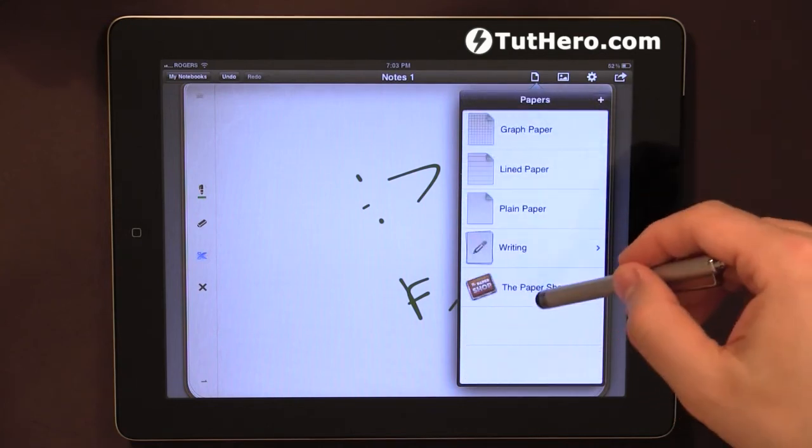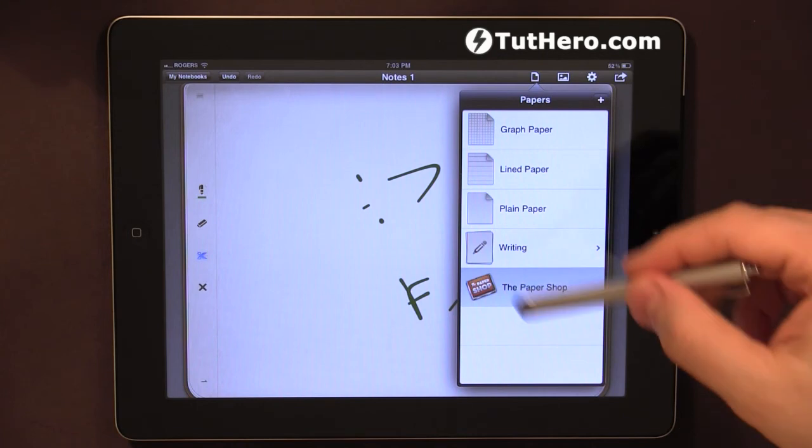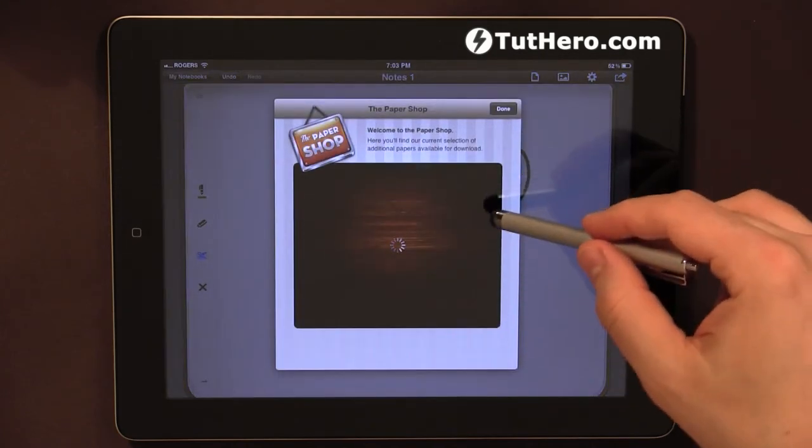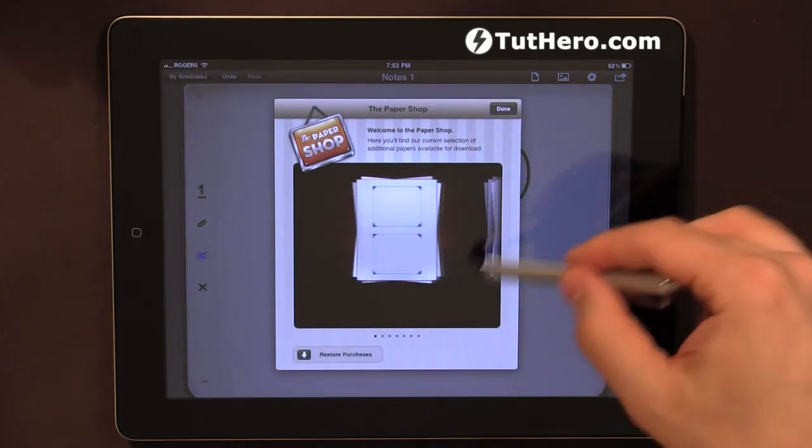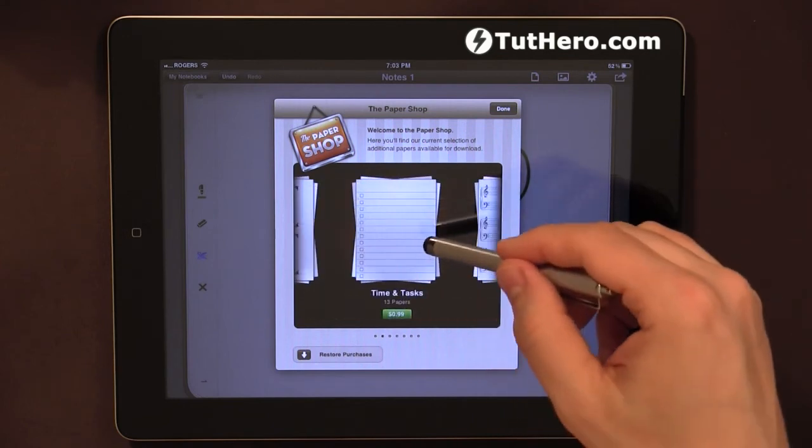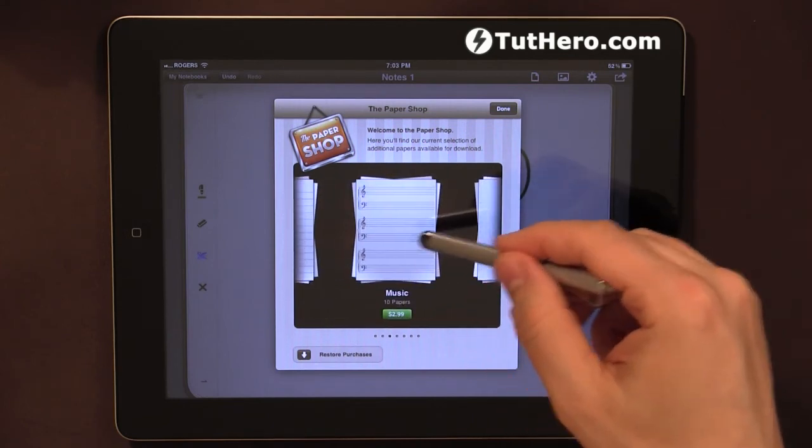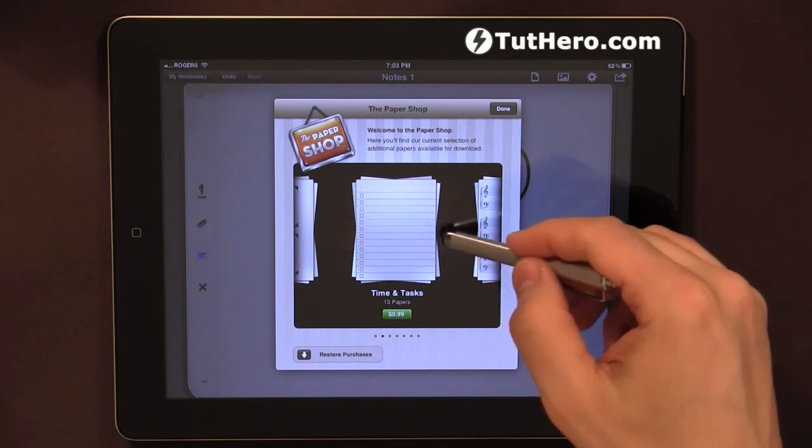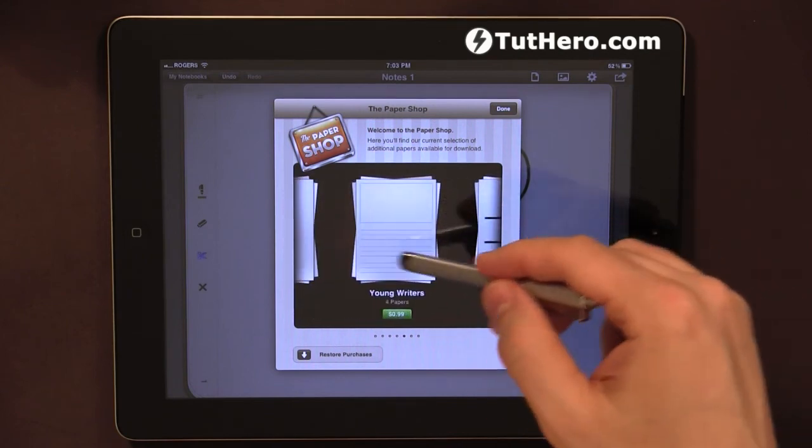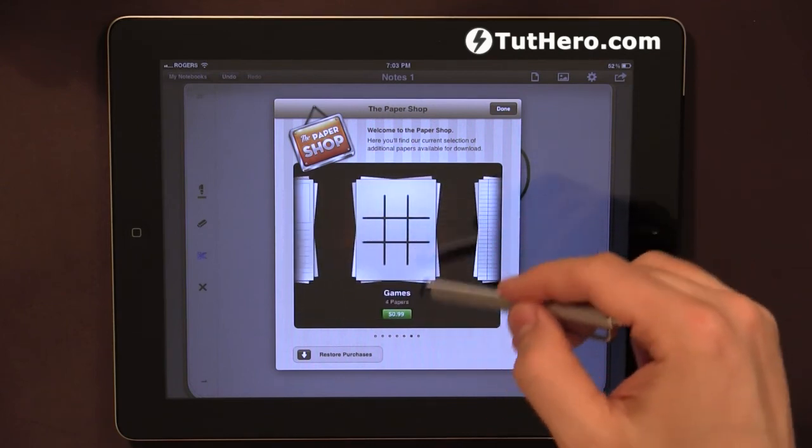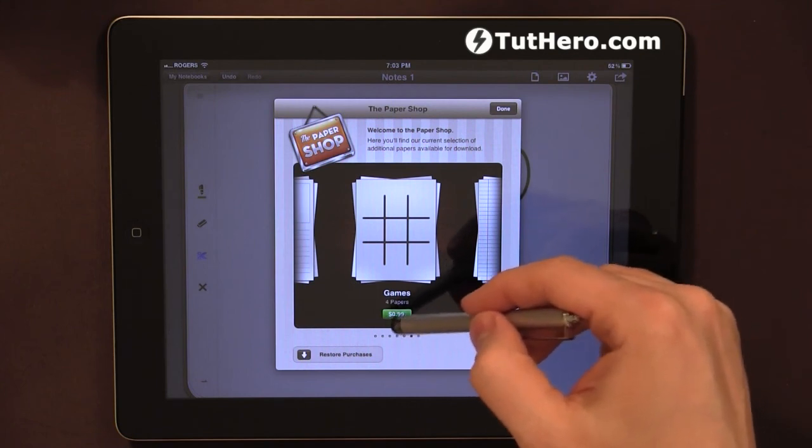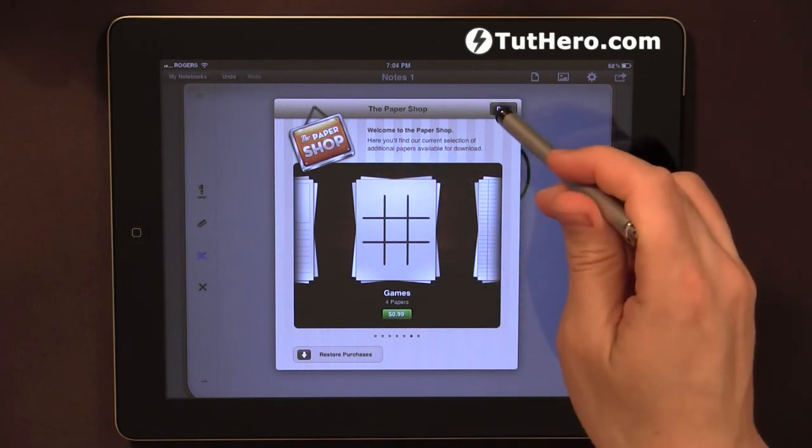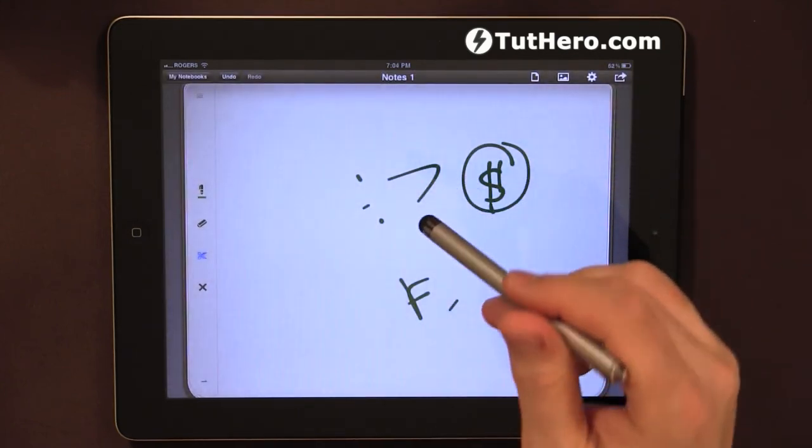You also have the option to go to the paper shop and use in-app purchases. You have different types of papers like music sheets, times and tasks, and other types you can buy for 99 cents. I'm not going to buy them, just going to hit done.